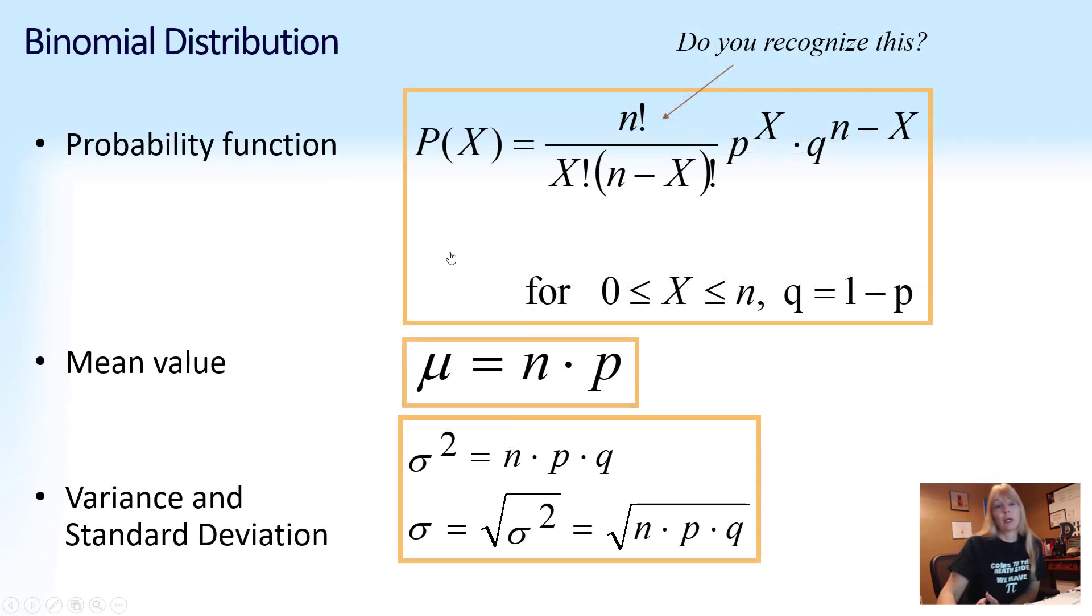This is the formula. This is definitely why you want to watch my Google Sheets videos, because it's kind of daunting. But this first piece right here, you should recognize this. Combinations. And then the probability of success to how many successes times the probability of failure to how many failures.